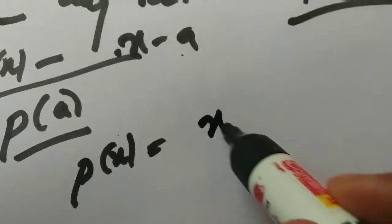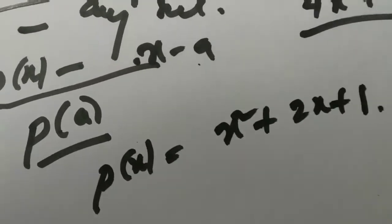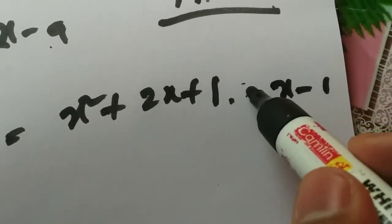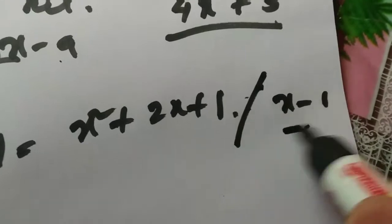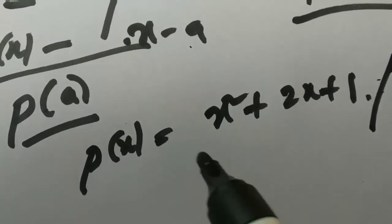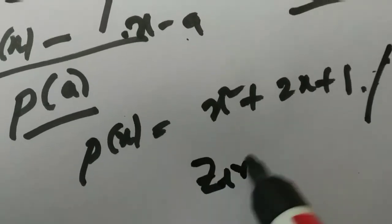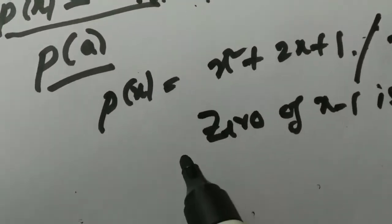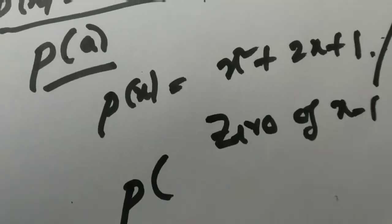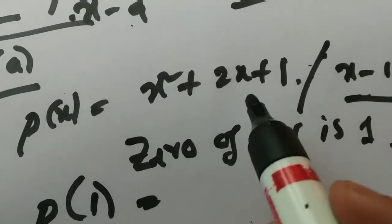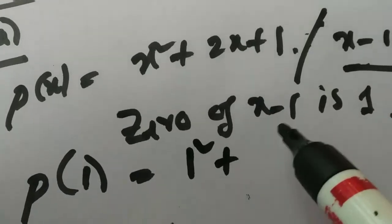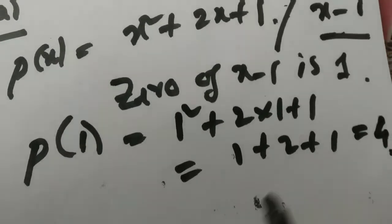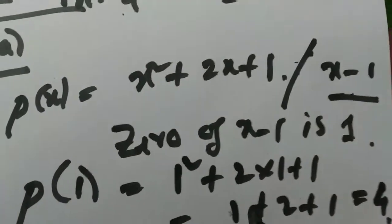P of X equals X squared plus 3X plus 1, and this is divided by the polynomial X minus 1. The zero of X minus 1 is 1. So we put P of 1: that is 1 squared plus 2 times 1 plus 1, which gives 1 plus 2 plus 1, that is 4. So the remainder is 4.